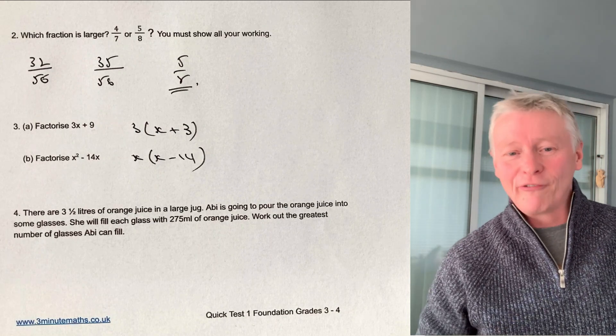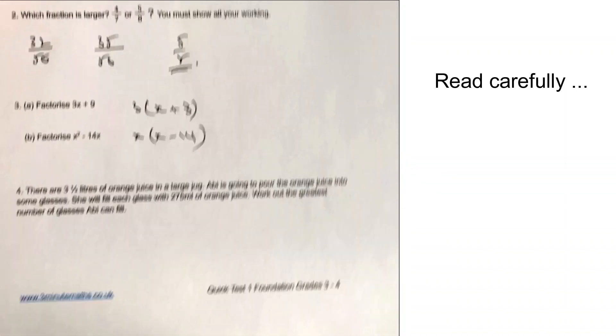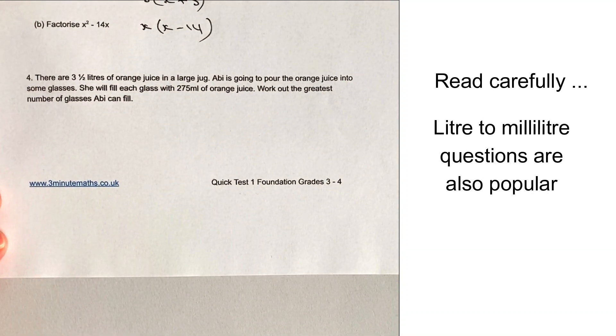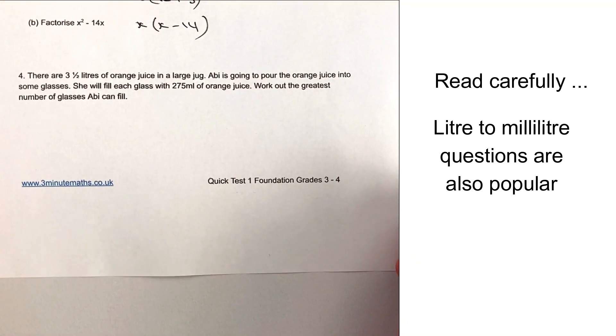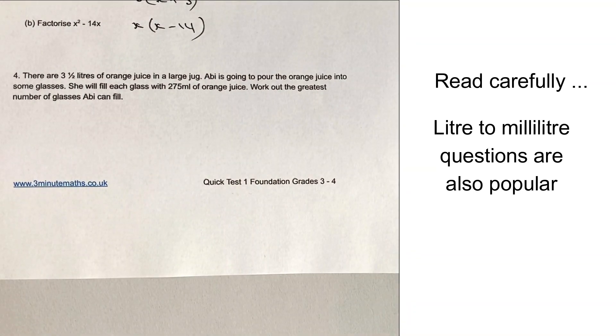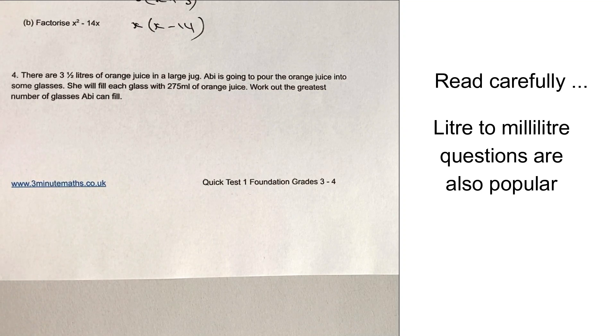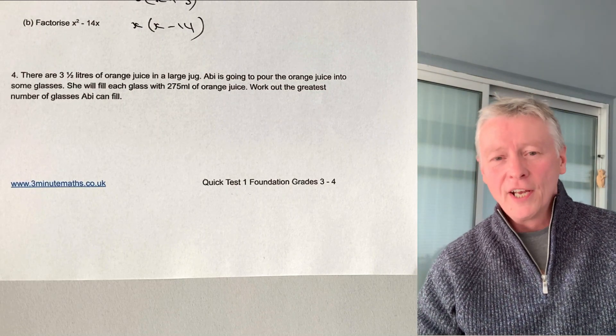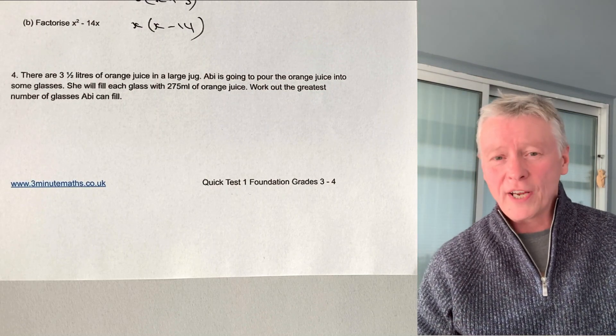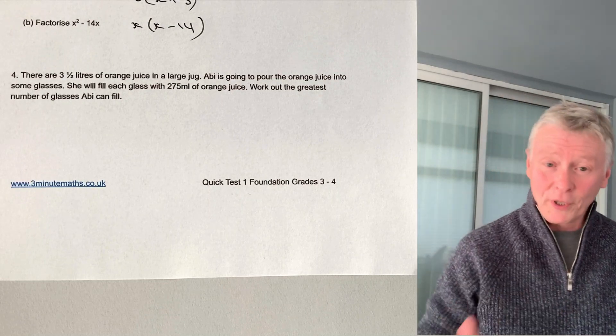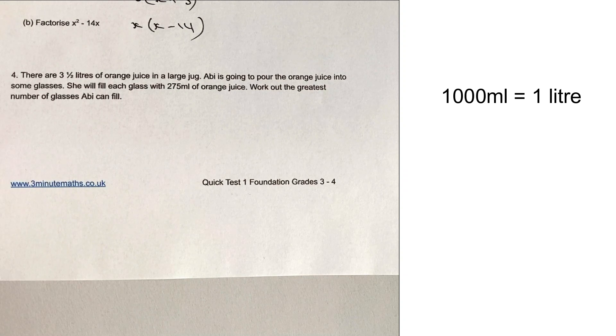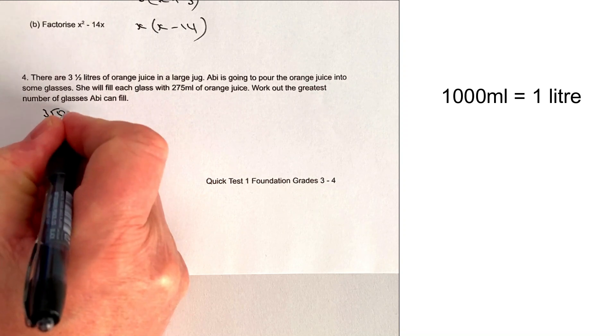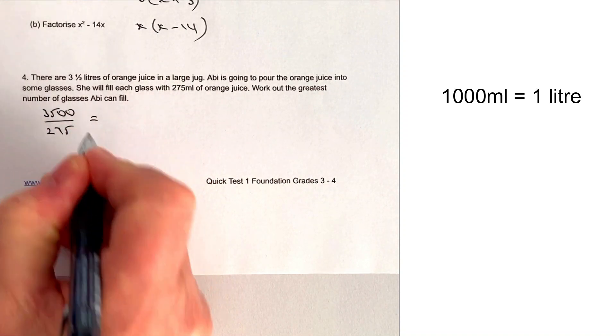Let's move on then to question number 4. Question number 4 is one of those long, wordy type questions. 3.5 litres of orange juice in a large jug, and Abby is going to pour the orange juice into some glasses. She'll fill each glass with that. So basically the way this works is that really it's a straightforward division type question. We're going to take 3.5 litres, which is the same as 3,500 millilitres, and we're going to divide it by the amount of millilitres that Abby can pour, which is 275. So I'm going to write this as a fraction of 3,500 divided by 275.